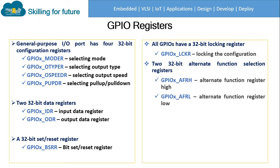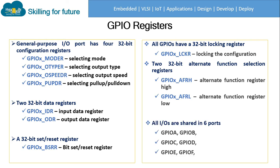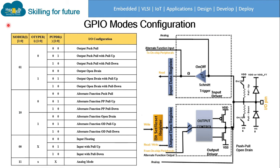We have two 32-bit alternate function registers — one high, one low. All input/output pins are shared across six ports: GPIO port A, B, C, D, E, and F. This is the tabular data representing the same configuration using the main registers — the mode register, output type register, and pull-up pull-down register.